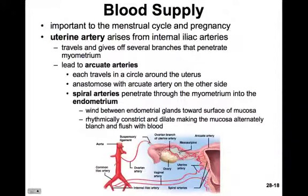The blood supply to the uterus is very important, both for the menstrual cycle and during pregnancy. The uterine artery arises from the common iliac artery and gives off several branches as it penetrates the myometrium. These lead to the arcuate arteries that traverse the edges of the uterus and anastomose with those from the other side. Many spiral arteries penetrate through the myometrium into the endometrium, winding between the endometrial glands towards the surface of the mucosa, rhythmically constricting and dilating to make the mucosa alternately flush with blood.